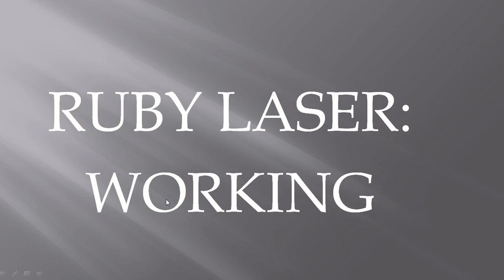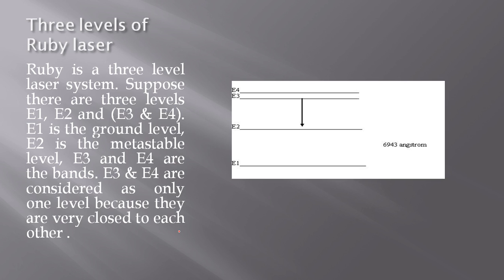Hello friends, last time I discussed the construction of a ruby laser. Today I will discuss the working of a ruby laser. Ruby is basically a three-level system. There are three levels: E1, E2, E3, and E4. These are energy bands — a group of levels. We will consider E3 and E4 as a single level. E1 is the ground level and E2 is the metastable level.